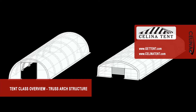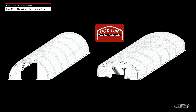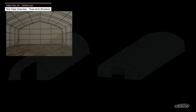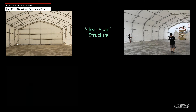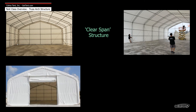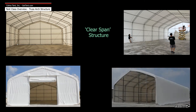Often referred to as a Quonset hut or hoop building, the truss arch fabric structure is an affordable, temporary, portable structure sporting a rigid internal framework. A clear span structure, no part of the supports or framework intrude on the interior of the structure, allowing for maximized use of internal space.